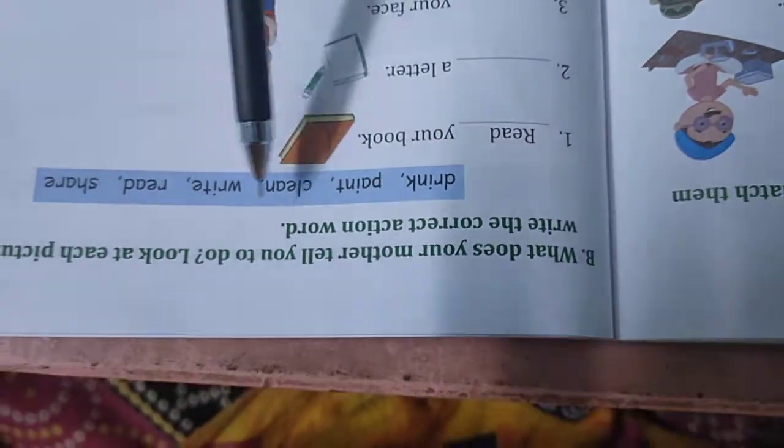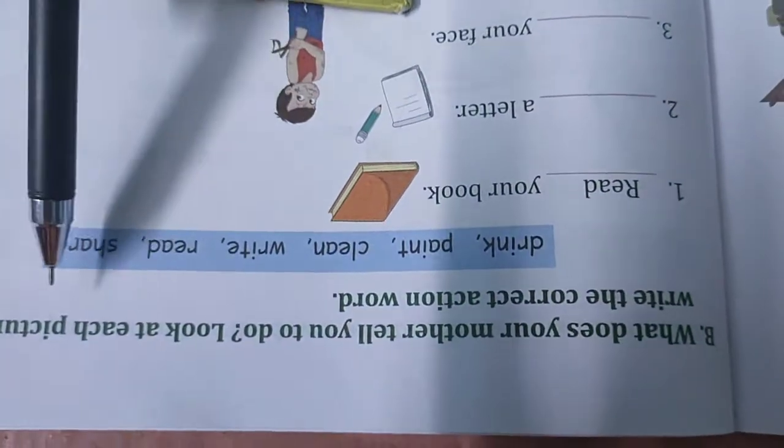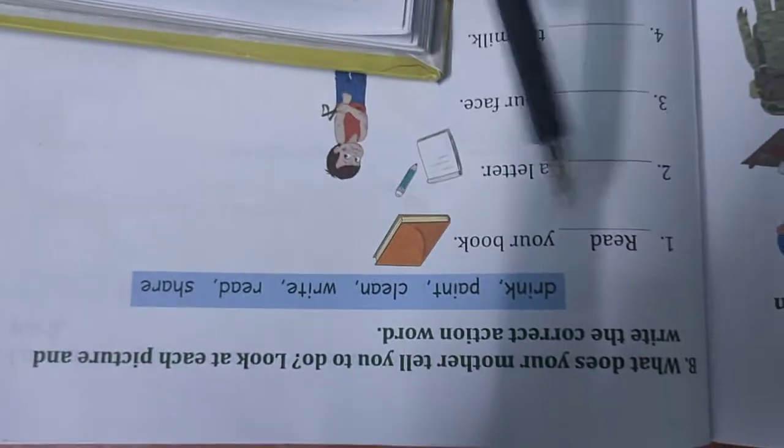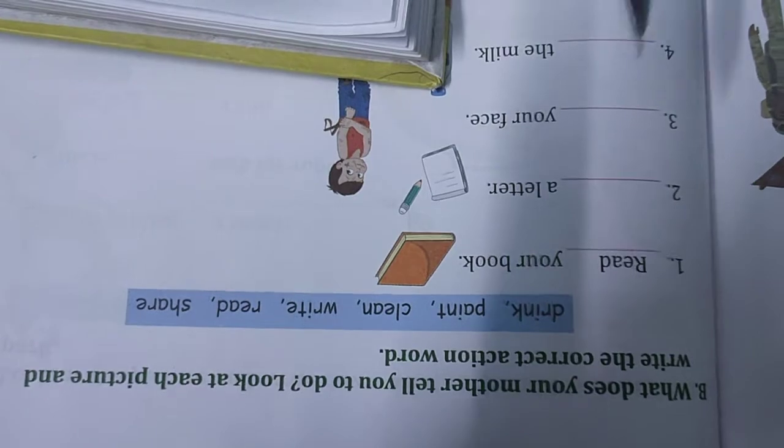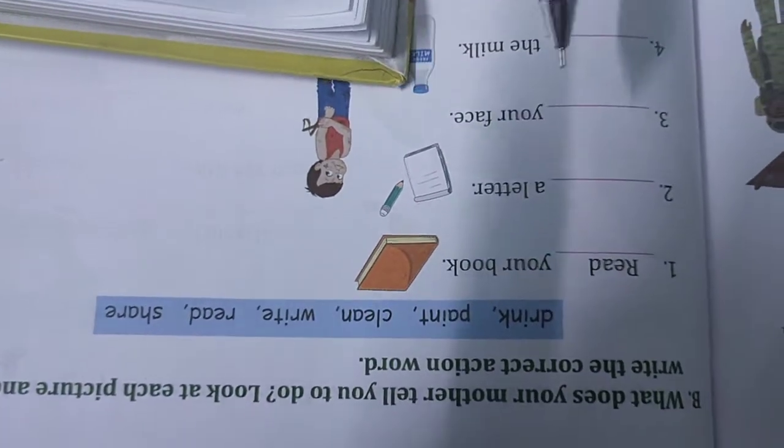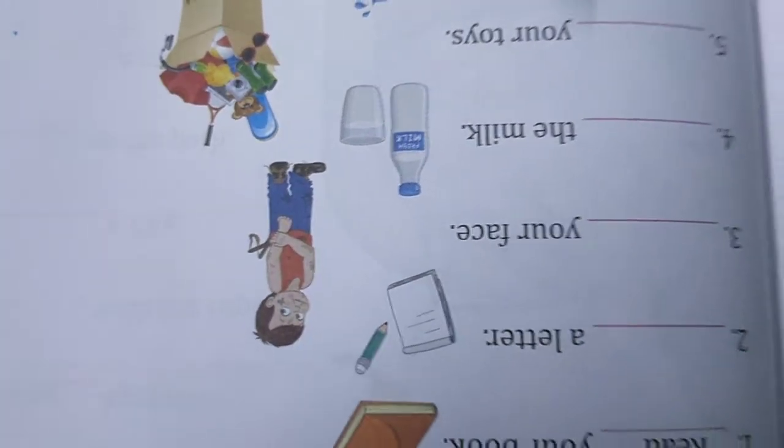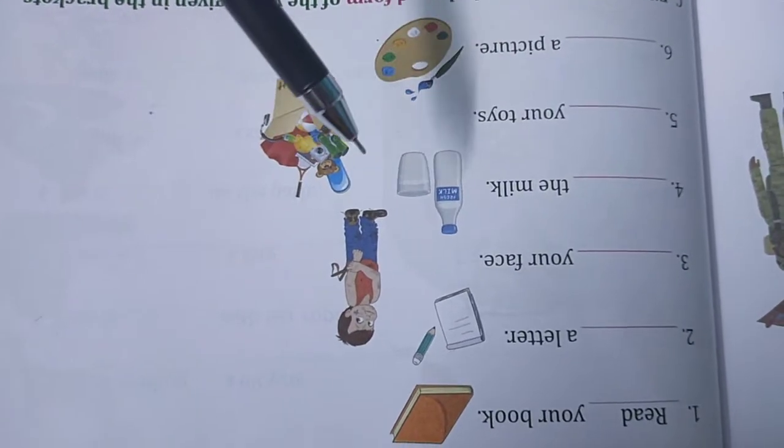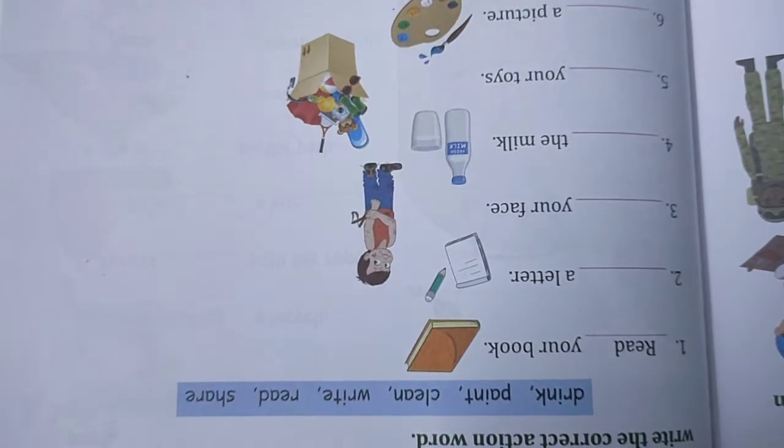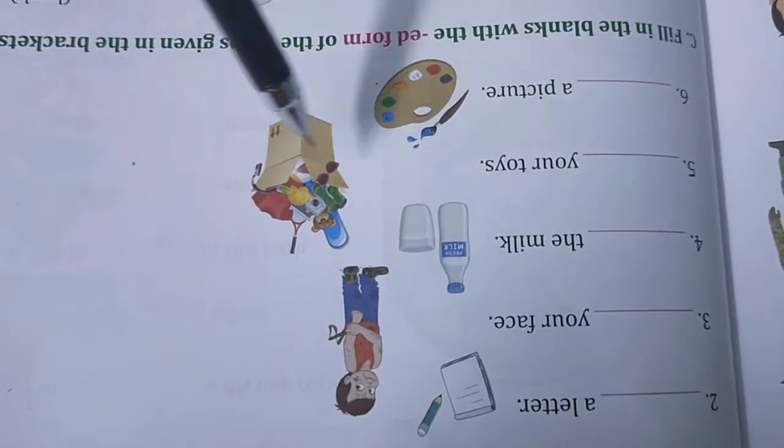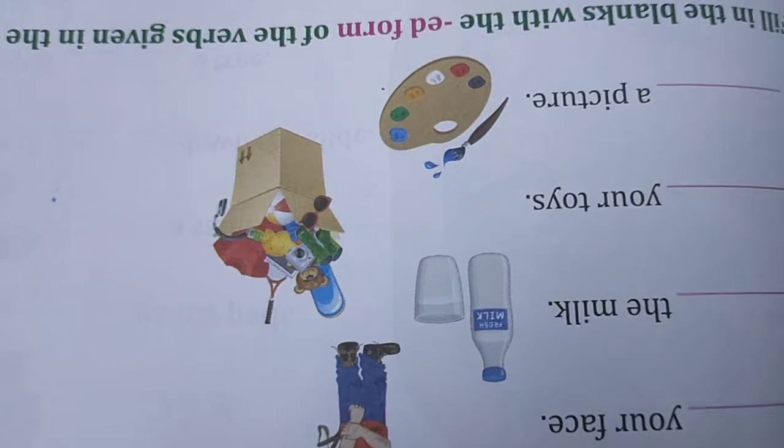Now number B. What does your mother tell you to do? Look at each picture and write the correct action word. Read your book, write a letter, clean your face, drink the milk, share your toys and paint a picture.